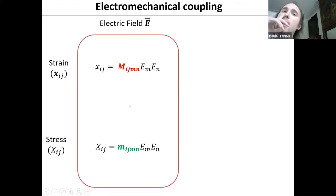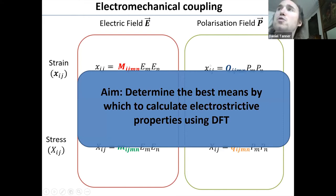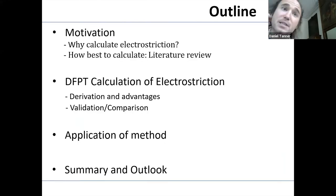So there are actually a few types of electromechanical couplings described by electrostriction. The first is one which couples a strain to an electric field. There's another which describes the coupling of a stress to an electric field. And then we have tensors which describe the coupling of a strain and stress to a polarization given by Q and small q. And so again, the aim of this work is to determine the best means by which to calculate each of these tensors in DFT.